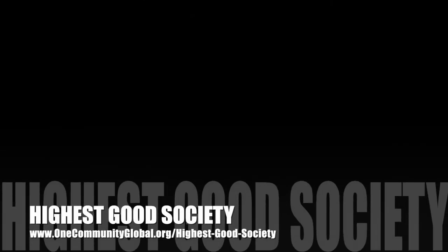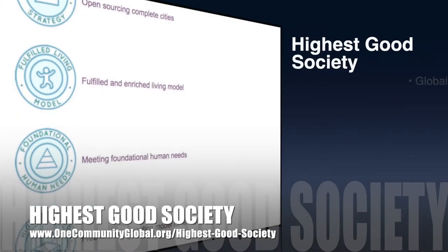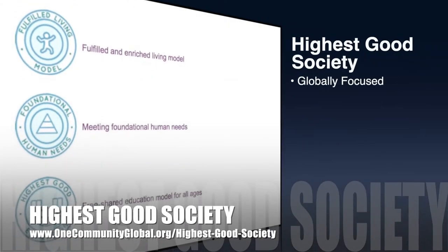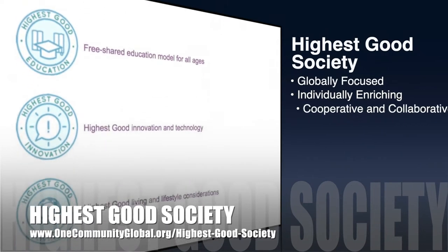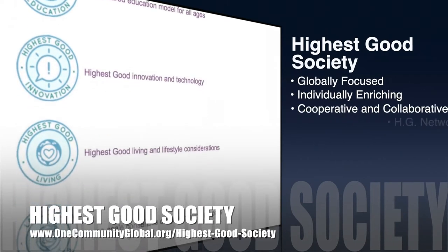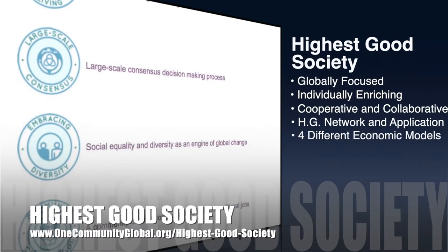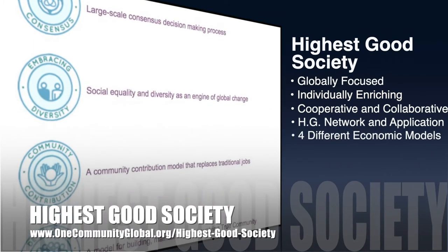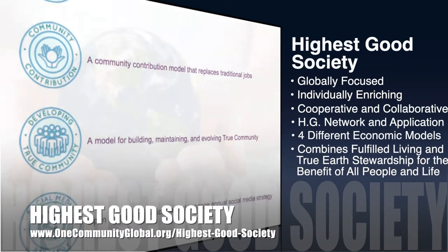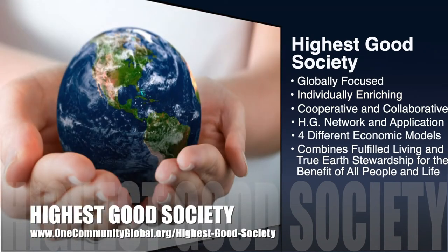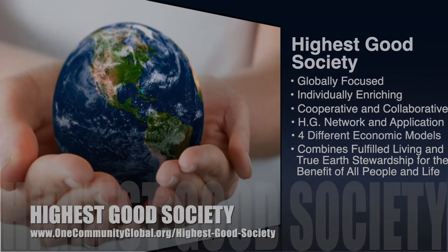The One Community approach to highest good society is globally focused, individually enriching, cooperative and collaborative. It includes a highest good network and application, four different economic models, and combines fulfilled living and true earth stewardship for the benefit of all people and all life on this planet.